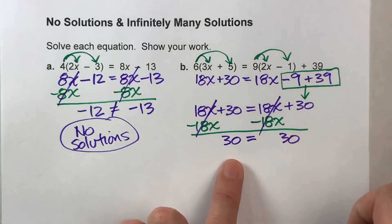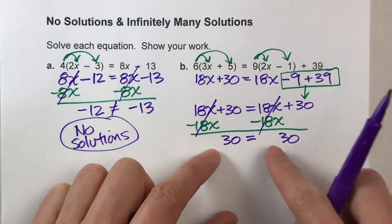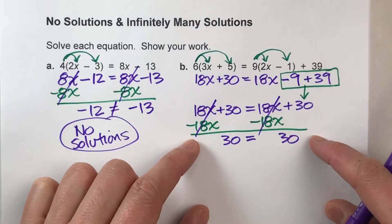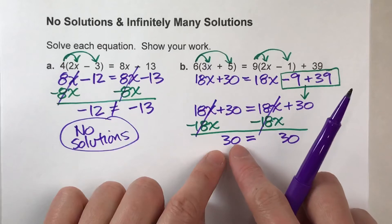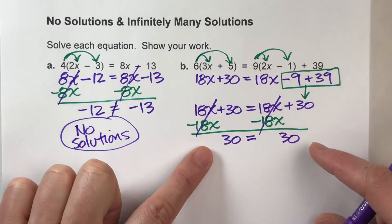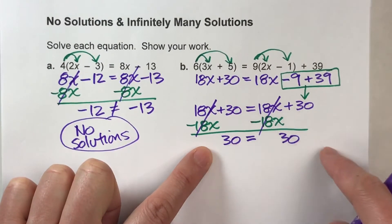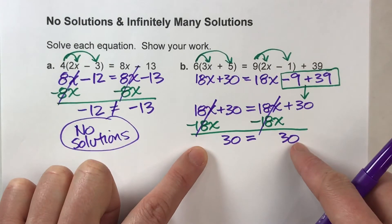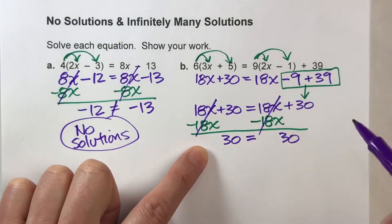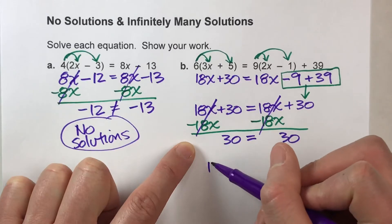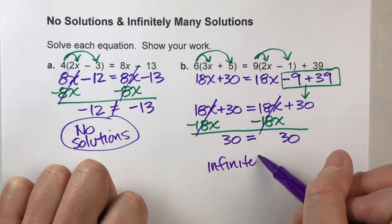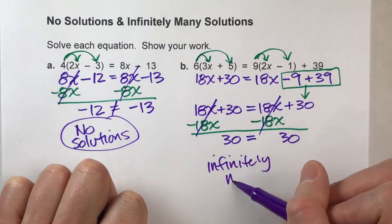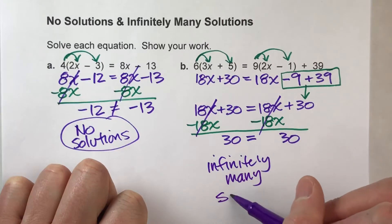we have a similar situation to what we just had. We have no x's left. The difference, though, is we have 30 is equal to 30. And that actually is a true statement. 30 will always equal 30.